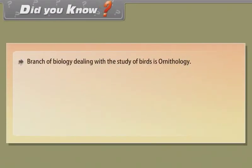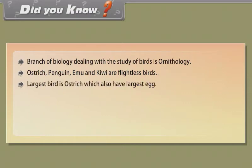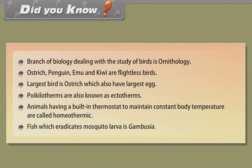Did you know? The branch of biology dealing with the study of birds is ornithology. Ostrich, penguin, emu and kiwi are flightless birds. The largest bird is the ostrich, which also has the largest egg. Poikilotherms are also known as ectotherms. Animals having a built-in thermostat to maintain constant body temperature are called homeothermic. The fish which eradicates mosquito larvae is Gambusia.